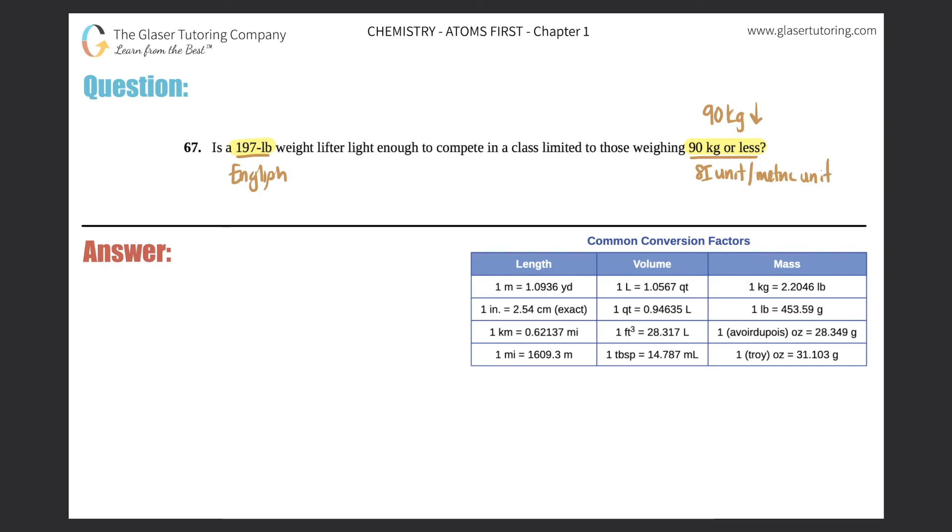So we have to convert one into the other in order to compare. Remember, you can't compare apples to bananas, meaning you can't compare two different units. You got to compare apples to apples. So we either have to turn pounds into kilograms, or we can turn kilograms into pounds. Now, since this is a weight class of 90 kilograms or less, I probably would turn the pounds into kilograms. So I'm going to go with the first one.